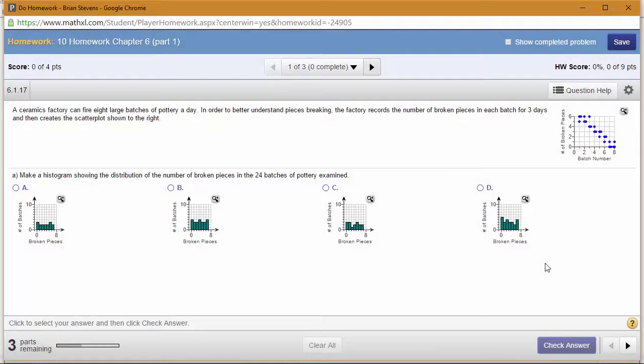This problem is found to be one of the most difficult, but it's really not that bad. What you have up top is a bivariate display. We see a scatterplot showing us the batch number and the number of broken pieces.